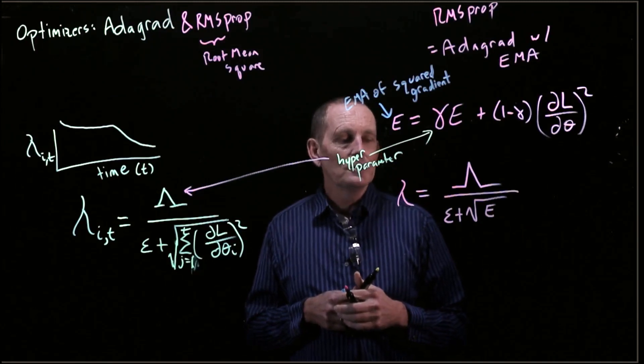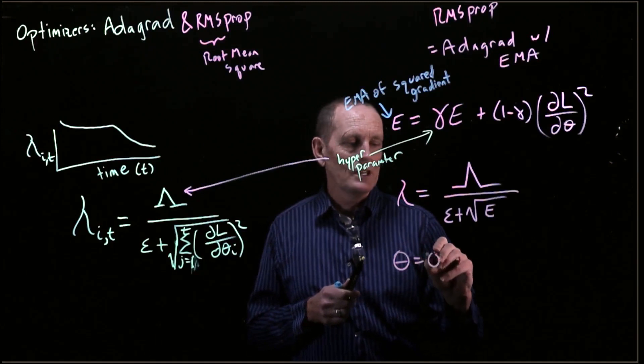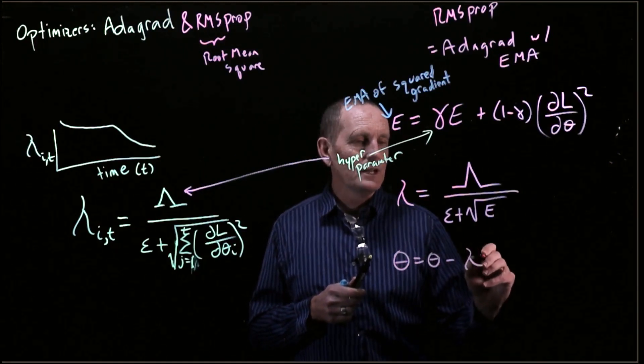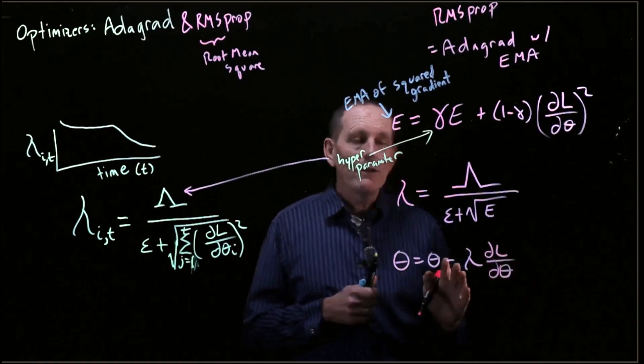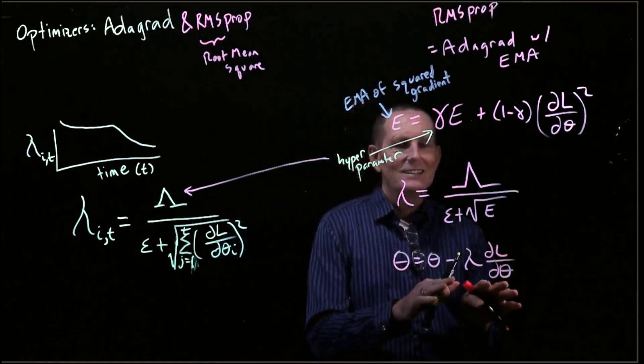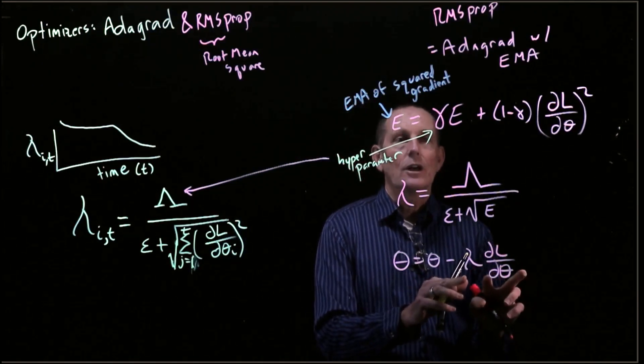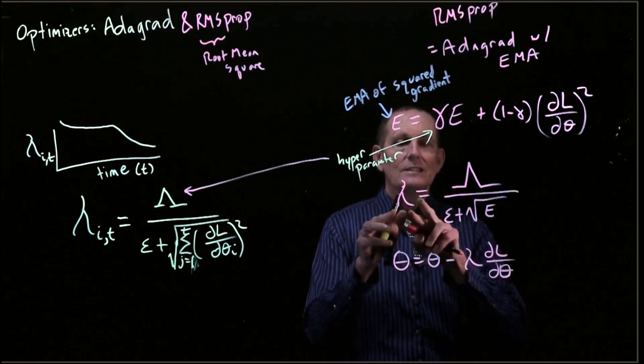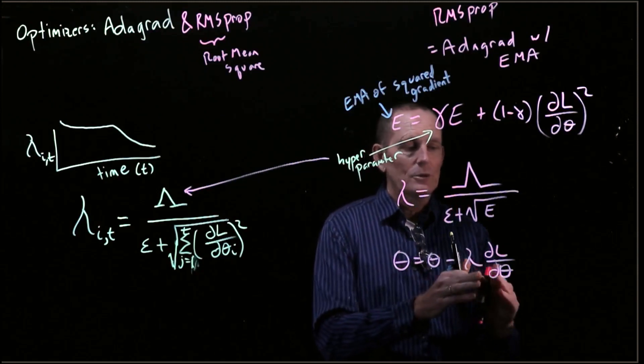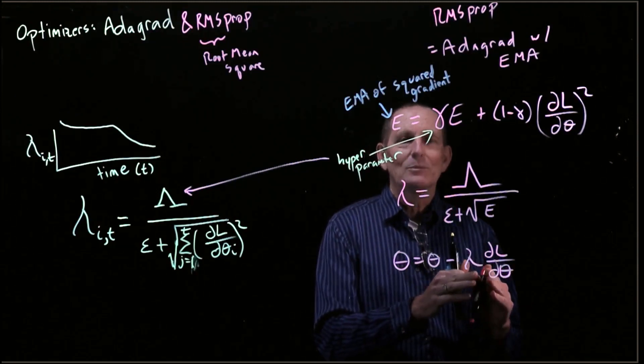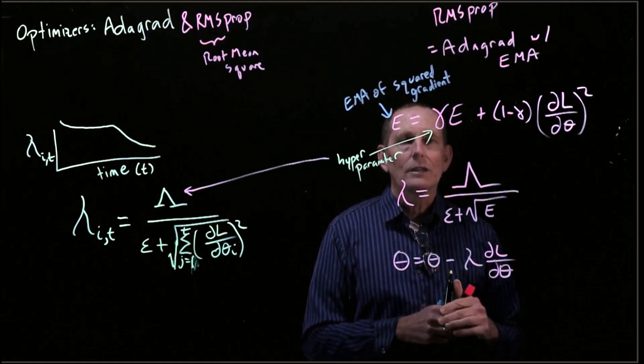And then we will use that learning rate. So we can say something like theta equals theta minus lambda times our gradient. However, unlike the normal stochastic gradient descent update, we have lambda, a single value getting broadcast across this whole vector. Instead, lambda is now a vector of individual learning rates for each parameter. And so we're doing this element-wise multiplication of each element of lambda times each element of the gradient.